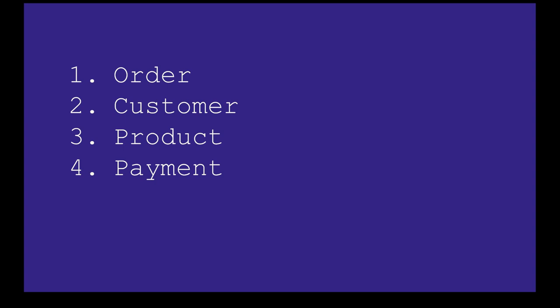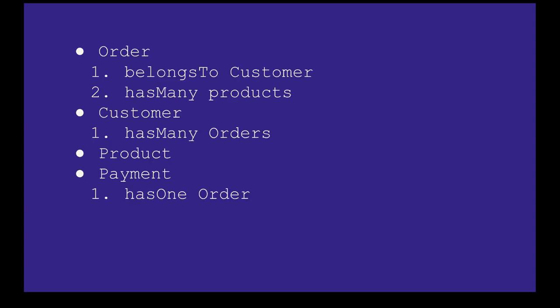Order and customer: customer can have multiple orders, but an order will belong to only one single customer. So: order has one customer, customer has many orders, order has many products, and order has one payment. Order belongs to customer, order has many products.